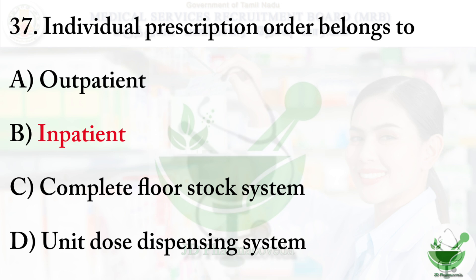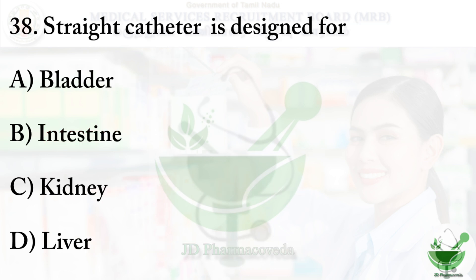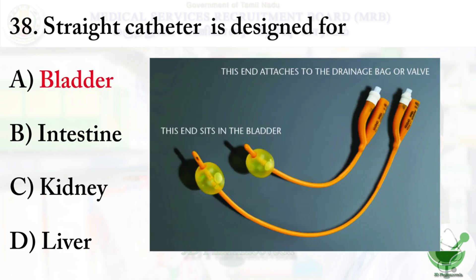Question number 38: Straight catheter is designed for — option A bladder, option B intestine, option C kidney, and option D liver. The correct option is option A, bladder.